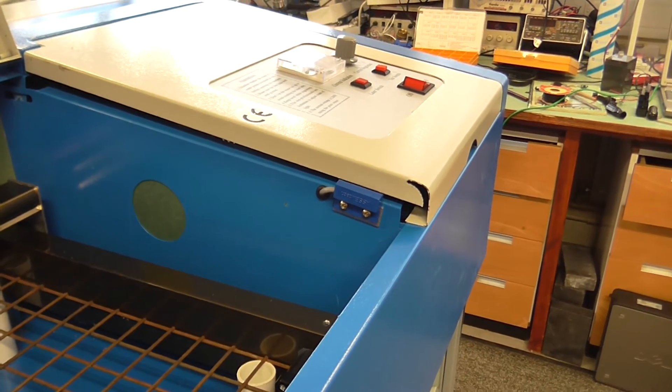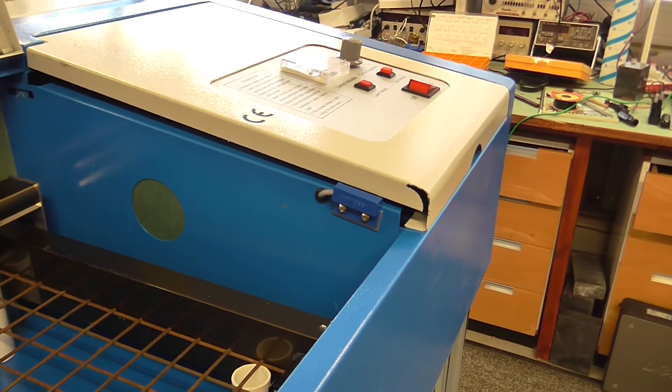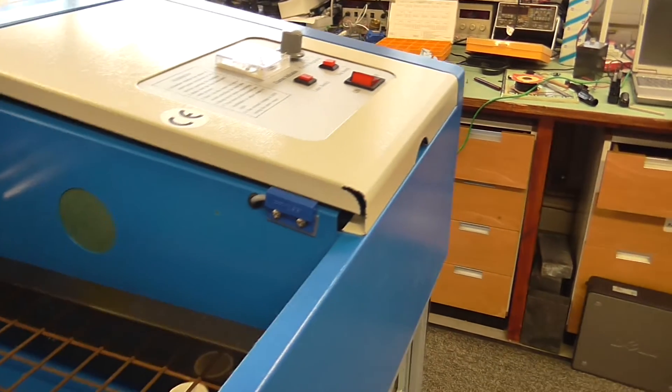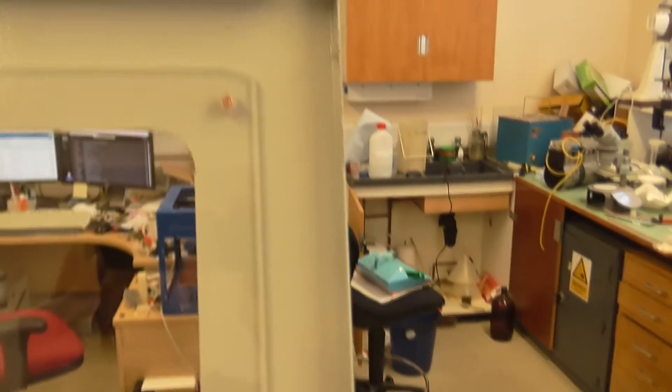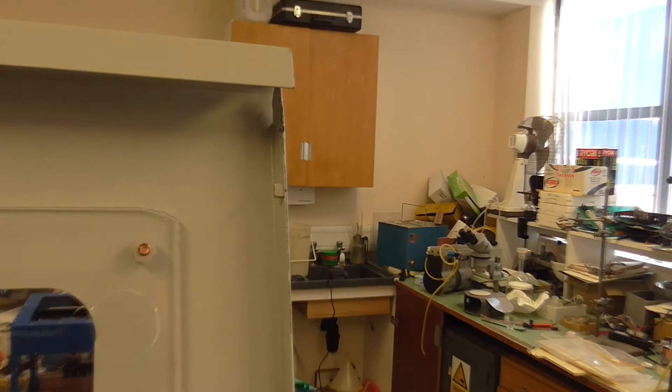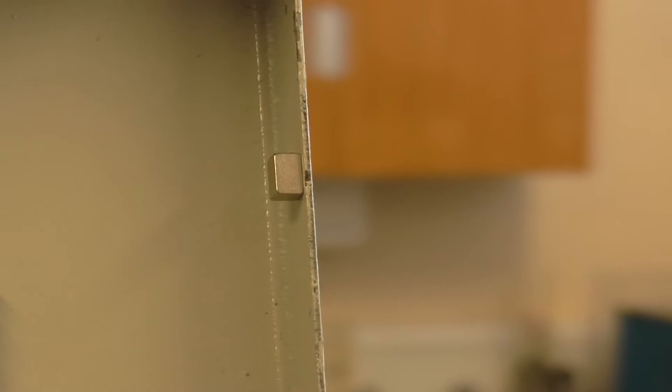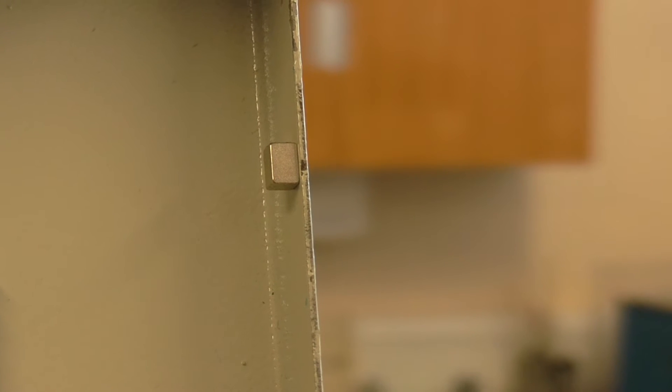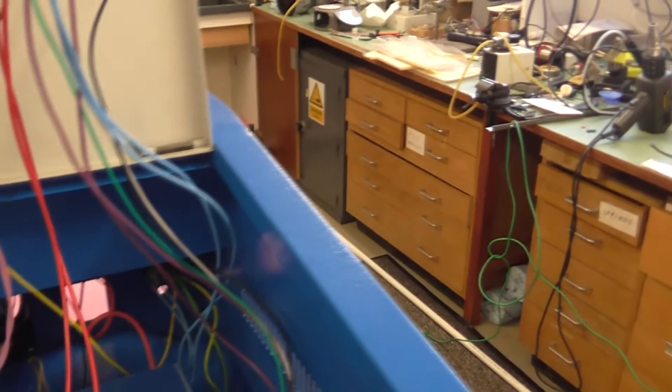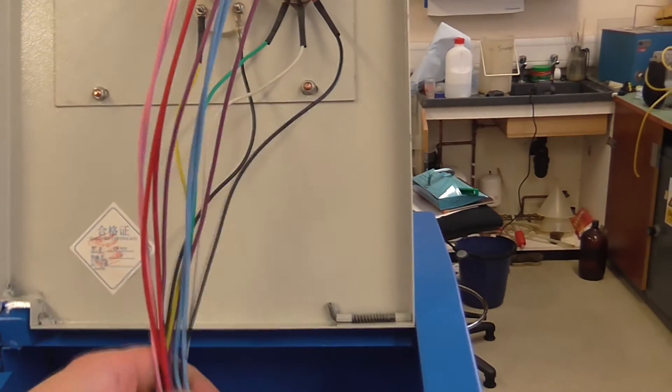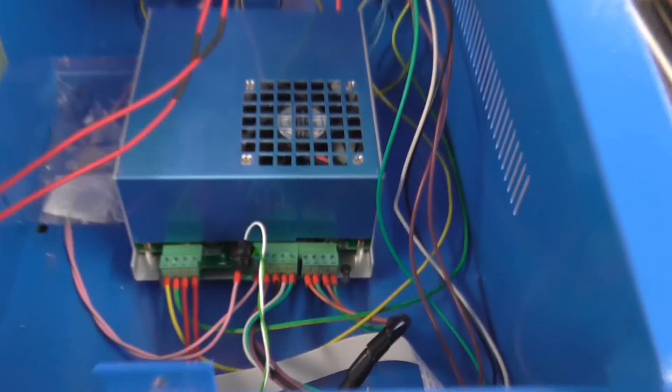As standard these machines don't have an interlock for the laser on the lid, so I've added in a reed relay I had lying around. That is currently triggered by this neodymium magnet you can see just there, salvaged from a hard disk drive, and that's at the moment just attached by its own magnetism to the lid. That'll get a little mount made up later. Apart from that it's all pretty standard. I've had all the panels and wiring out and cleaned things up in here.